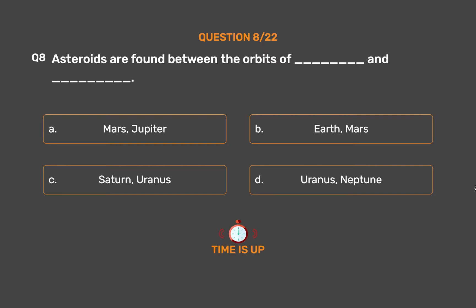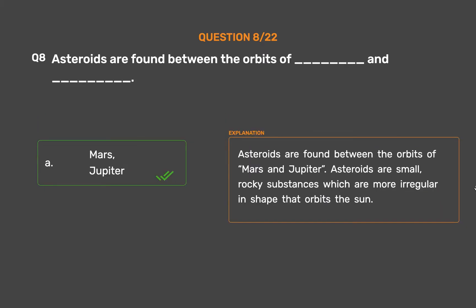The correct answer is Option A: Mars and Jupiter. Asteroids are found between the orbits of Mars and Jupiter. Asteroids are small, rocky substances which are more irregular in shape that orbit the Sun.